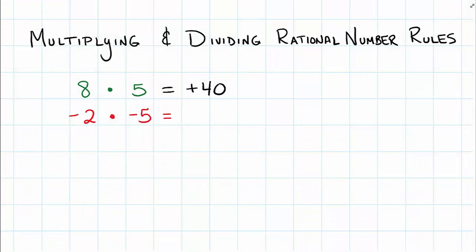those two negatives when multiplied together are going to give us a positive answer. 5 times 2 is 10, so negative 2 times negative 5 gives us a positive 10. Alright, so that's the positive side of things.